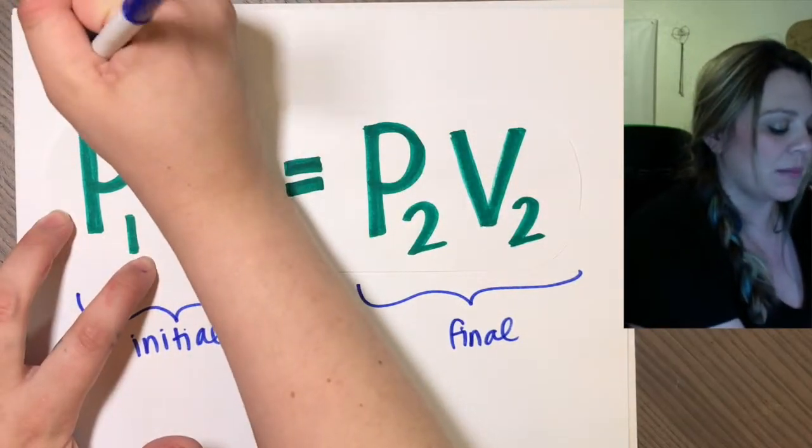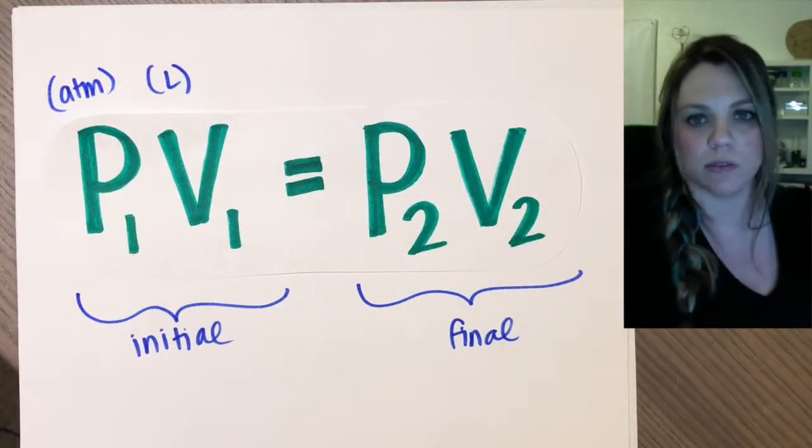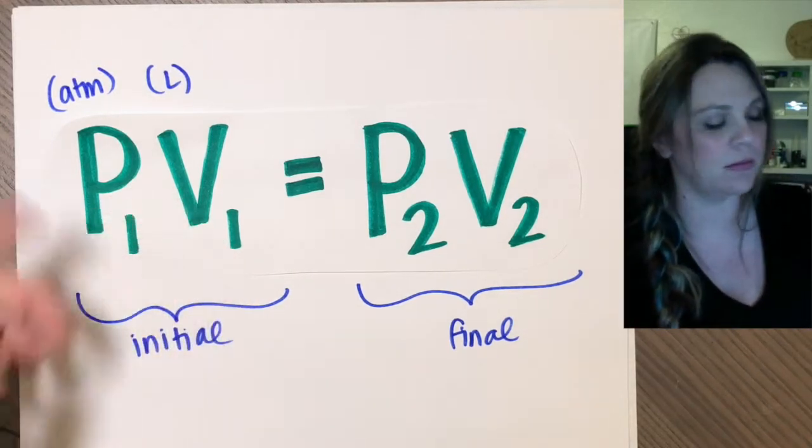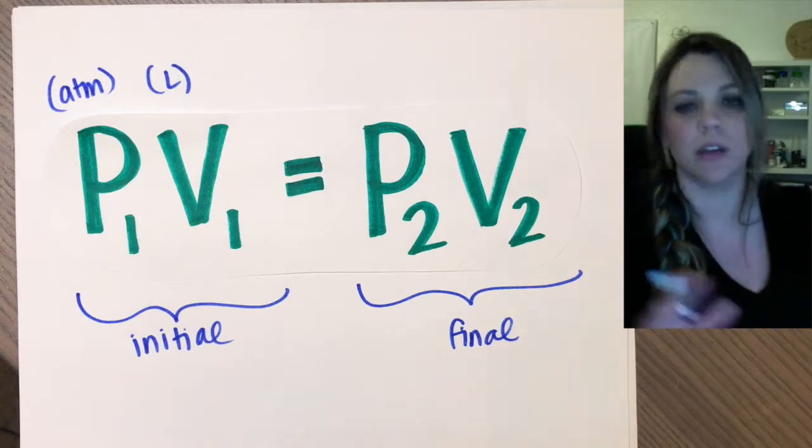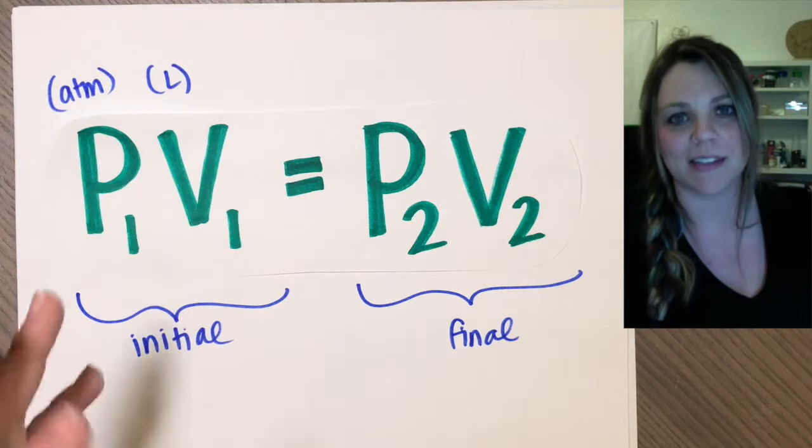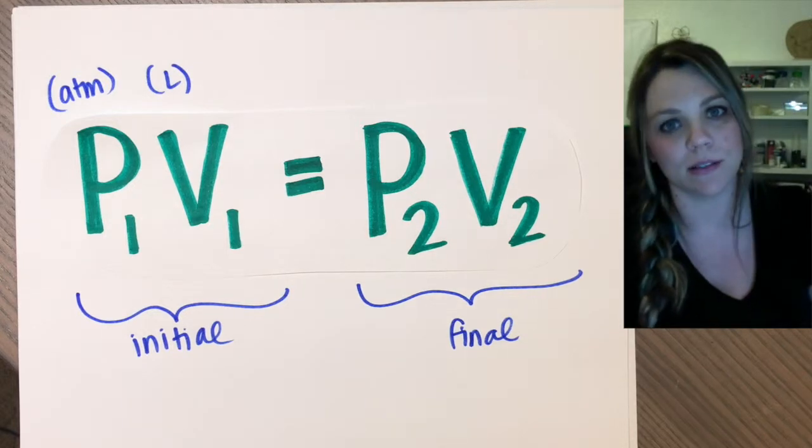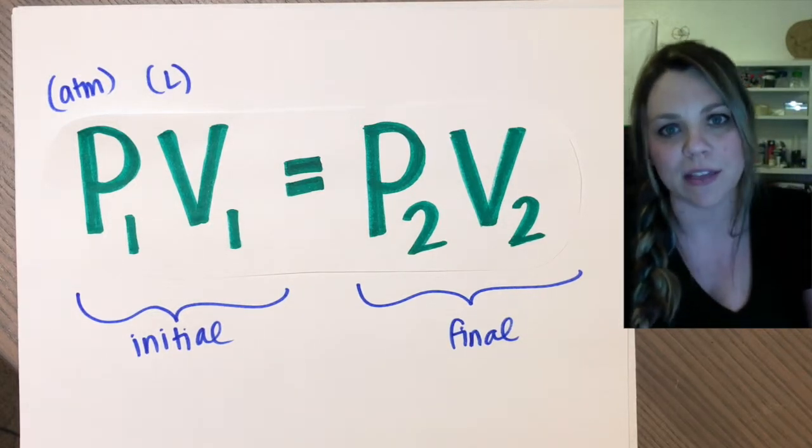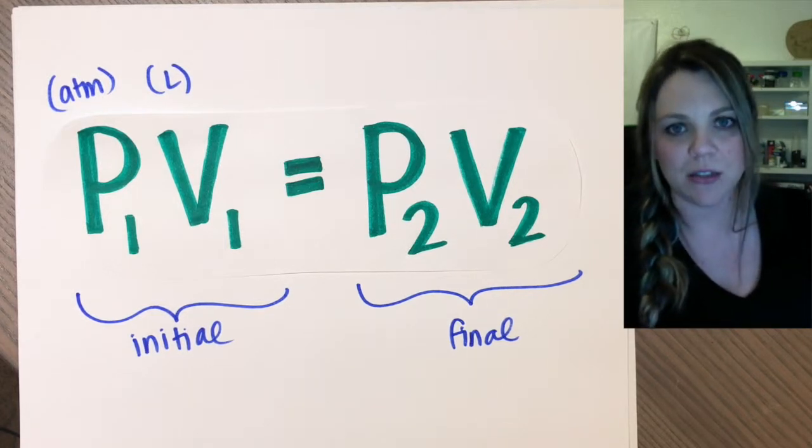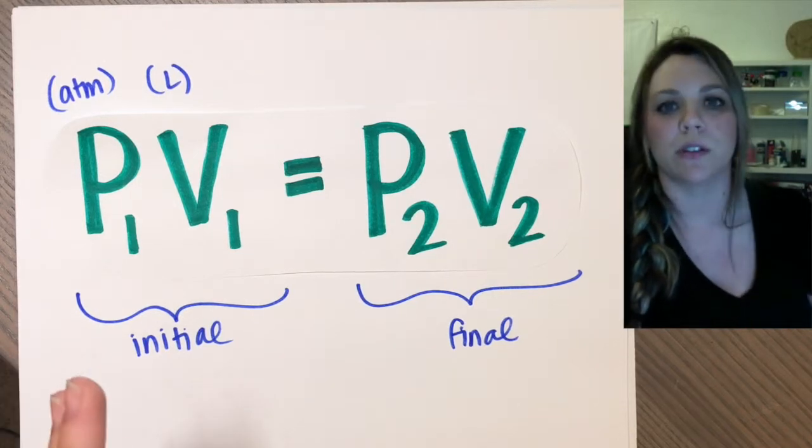Pressure is always going to be in atmospheres. Volume is always going to be in liters or some variation thereof. So you could solve these with milliliters. Actually, you could solve these in torr as well. But it's really good to just get in the habit of getting everything into atmospheres and liters because eventually when we get to the ideal gas law, you're going to have to convert everything to there anyway.